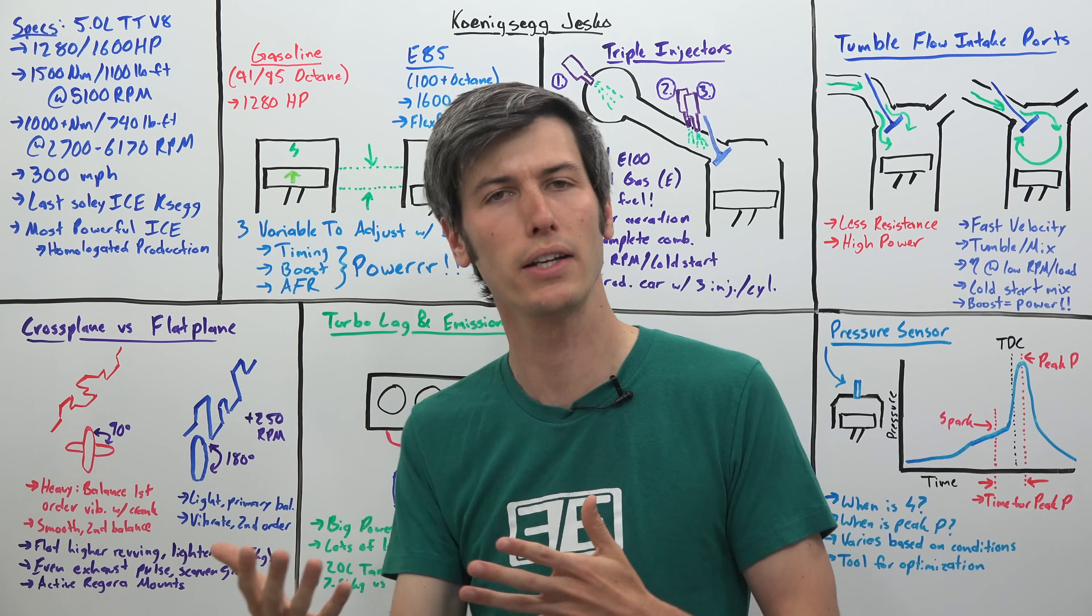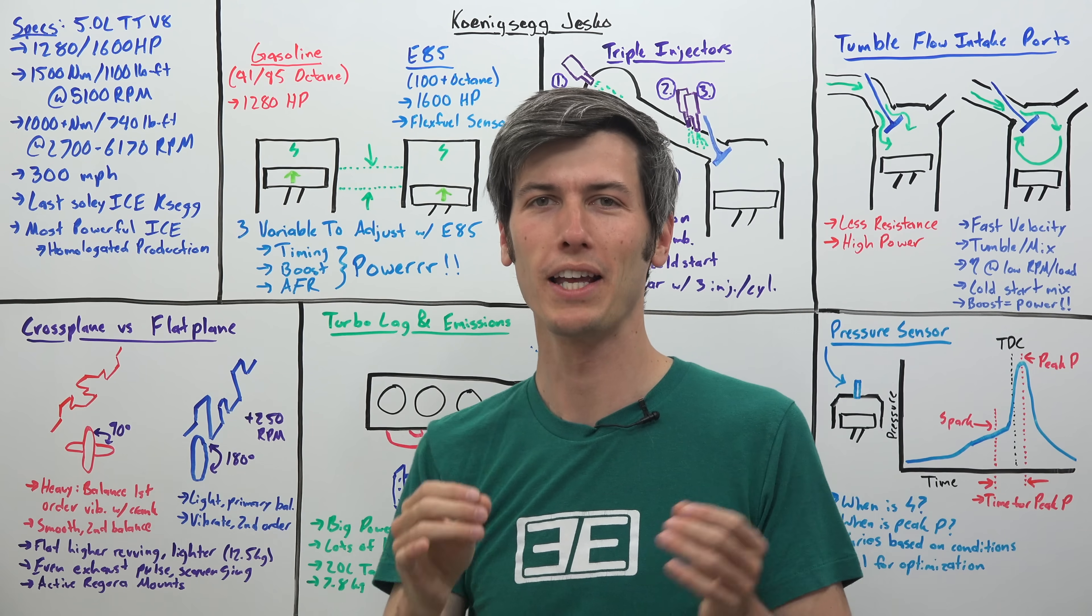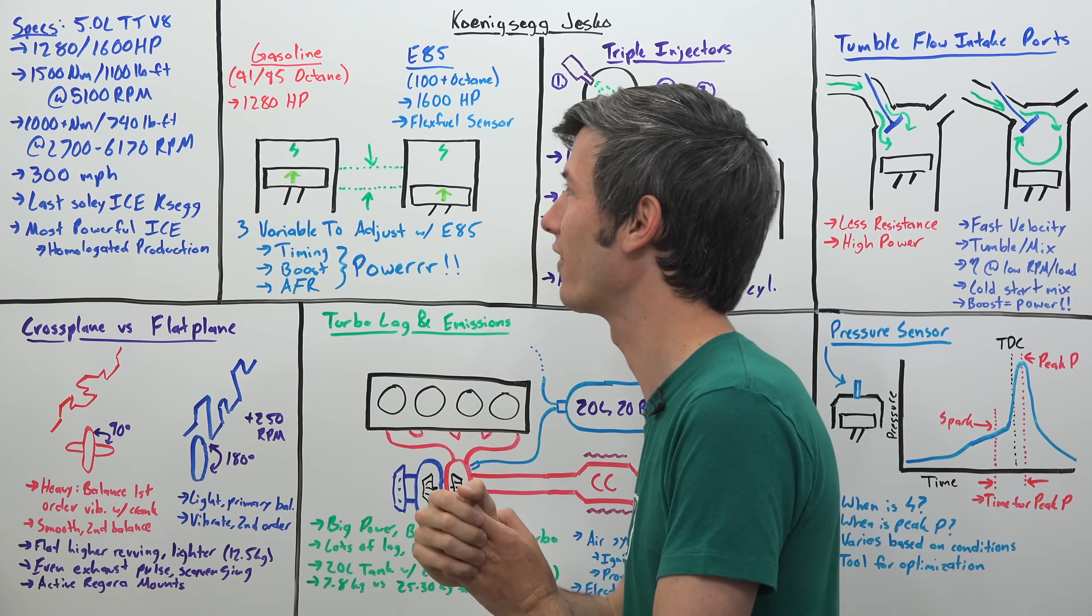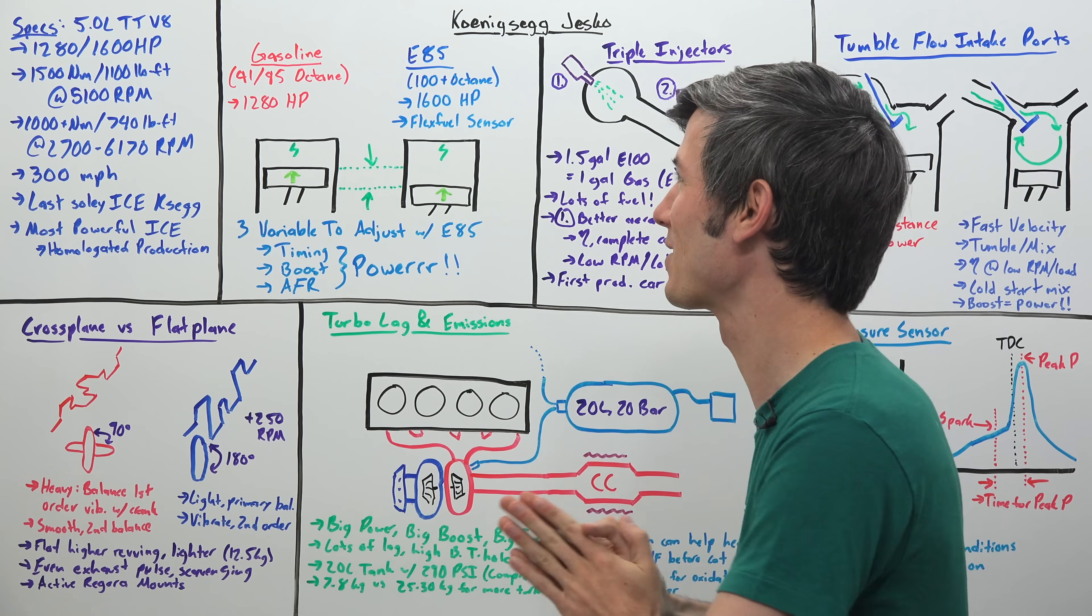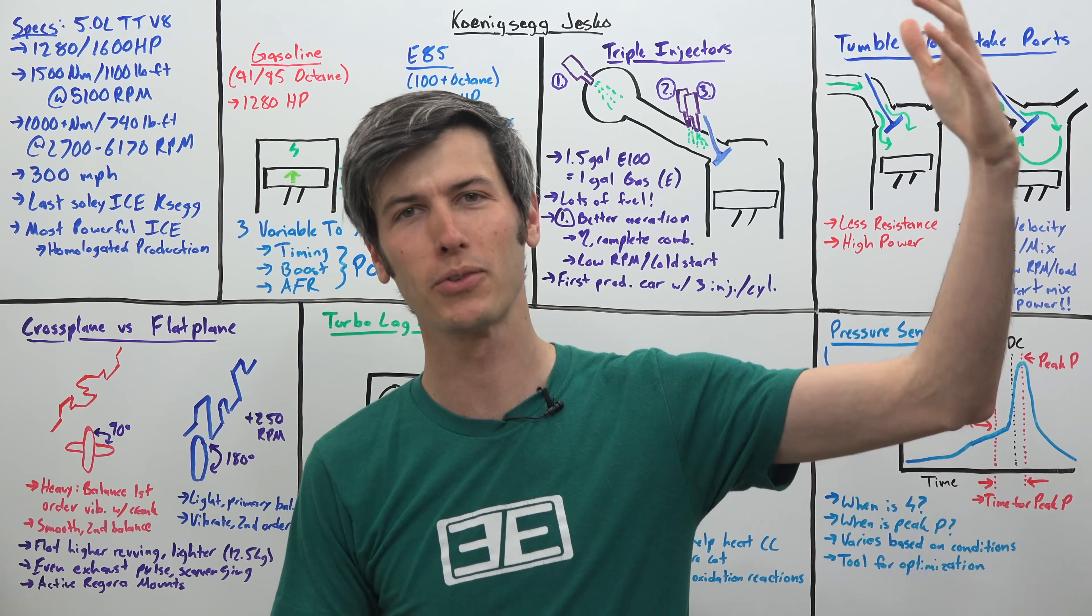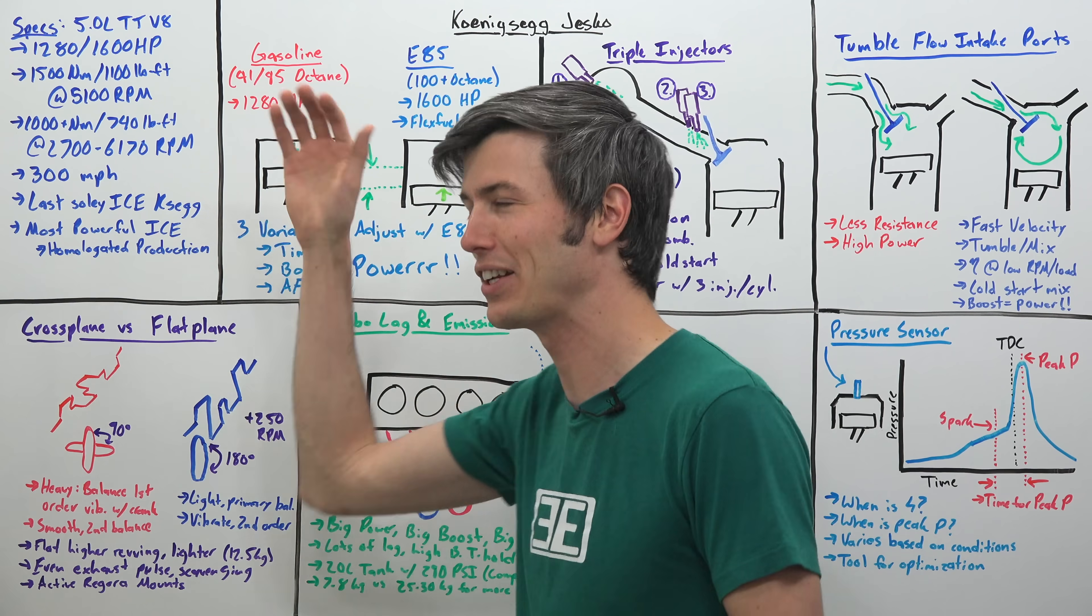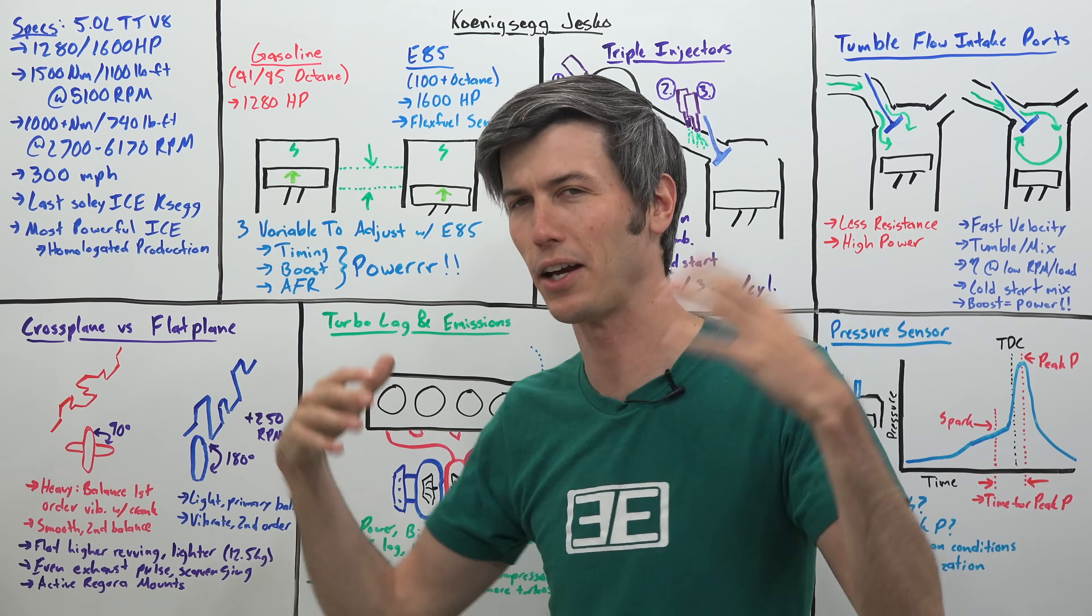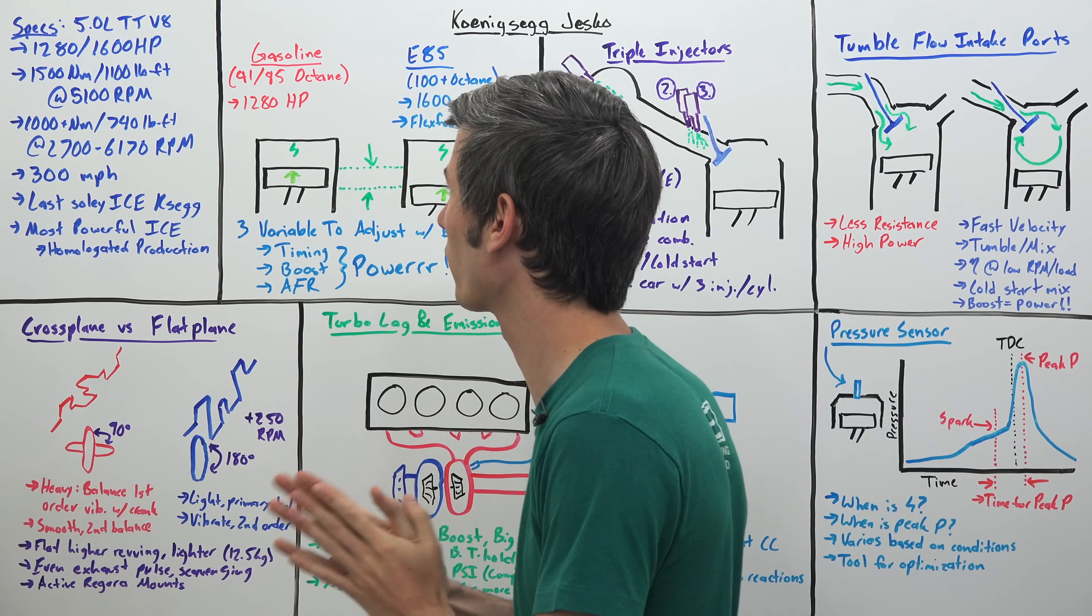It's now producing 1280 horsepower on pump gas, 91 octane US or 95 octane Europe, or 1600 horsepower if it is running on E85. It's capable of producing 1500 newton meters of torque or 1100 pound-feet. We've just heard about Ram's new heavy-duty truck that has a thousand pound-feet of torque. This has 1100 pound-feet of torque and a thousand more horsepower than that Ram truck.